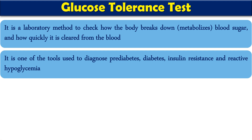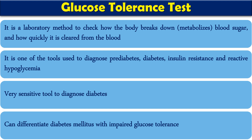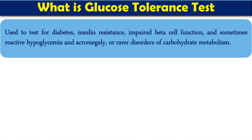GTT is one of the tools used to diagnose or differentiate pre-diabetes, diabetes, insulin resistance, and reactive hypoglycemic conditions. This test is very sensitive for diagnosing diabetes and is a better test compared to the normal glucose test. By this test, you can also differentiate normal renal glycosuria, diabetes mellitus, or impaired glucose tolerance.